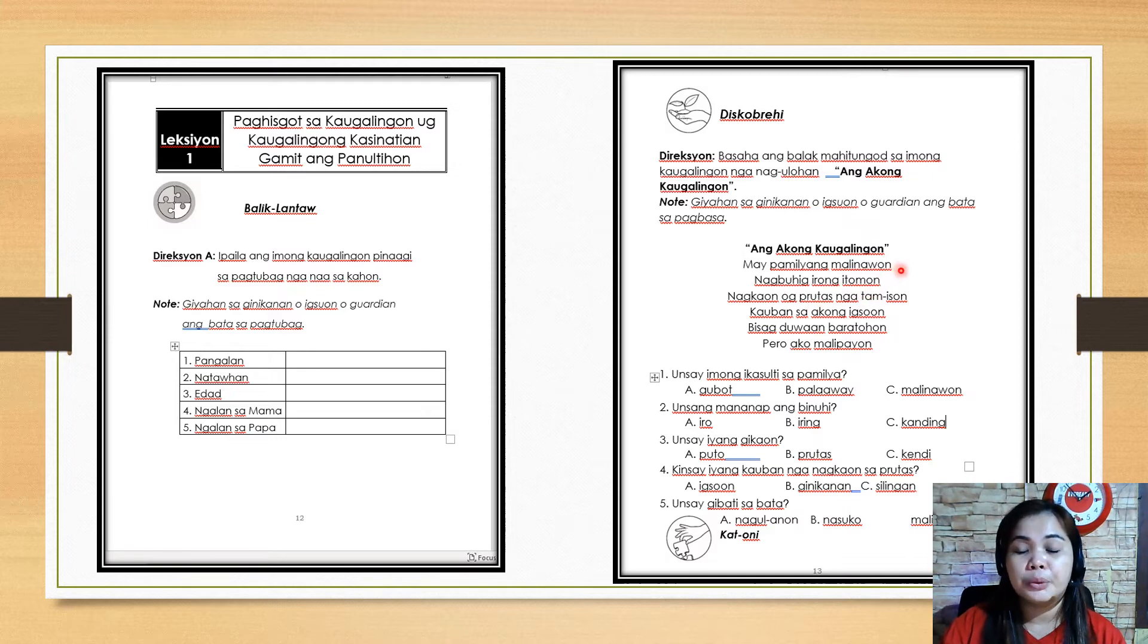Let's translate this again. The title is I myself. May pamilyang malinawon: there is a peaceful family. Nagbuhig irong itumon: they have a pet dog and the color is black. Nagkaon o prutas ngatam ison: the pet dog is eating the fruit or the sweet fruit.